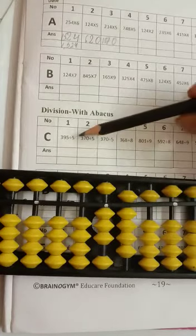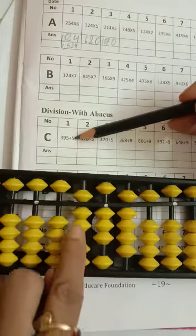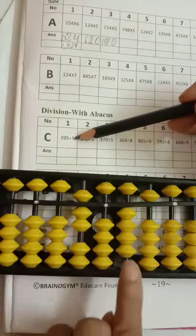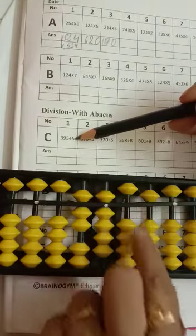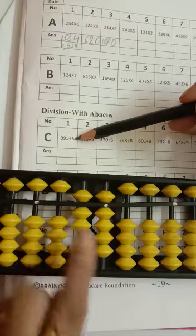So 5 7's are 35. 5 7's are minus 30 minus 5. We have a 45. 5 9's are 40 minus 40 minus 5. Your answer will be 79.